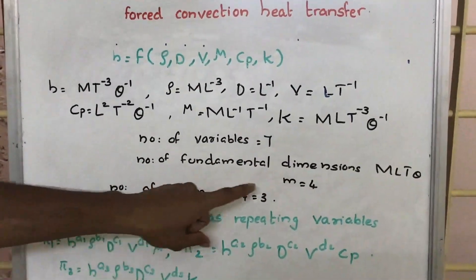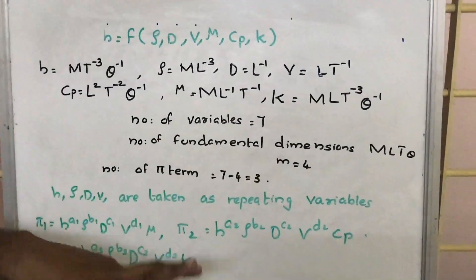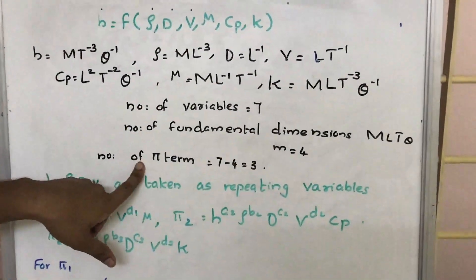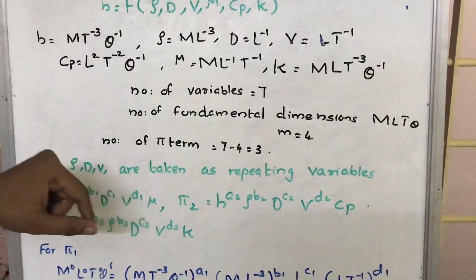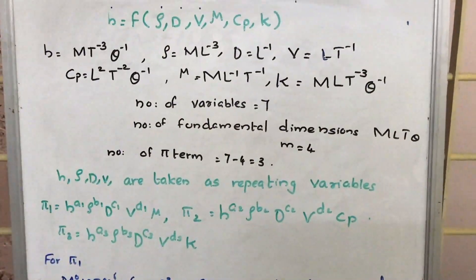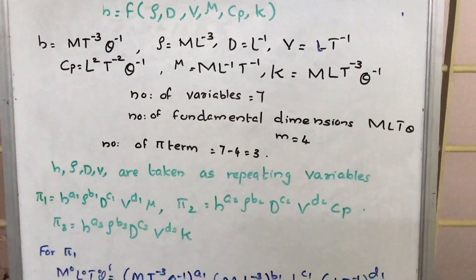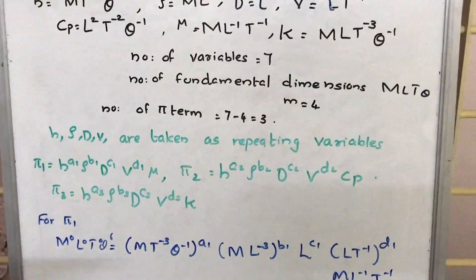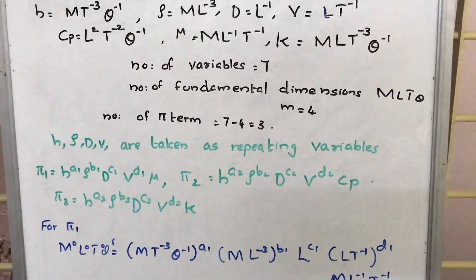So, 7 minus 4 gives us 3, and that is equal to the number of pi terms. We have the number of pi terms equal to 3, and we denote those pi terms as pi 1, pi 2, and pi 3.